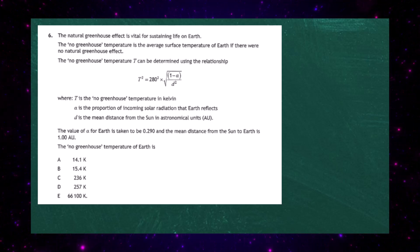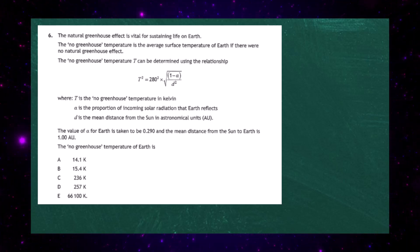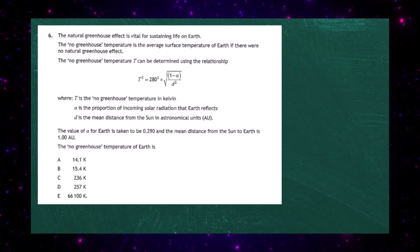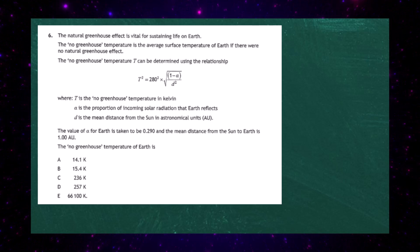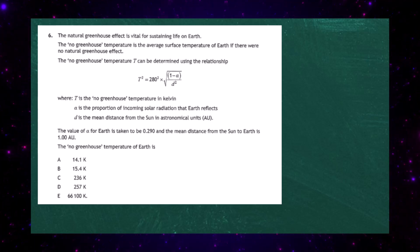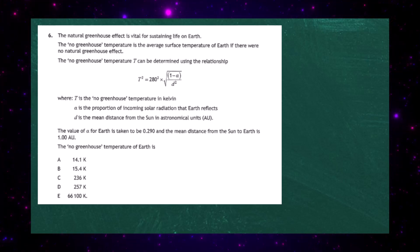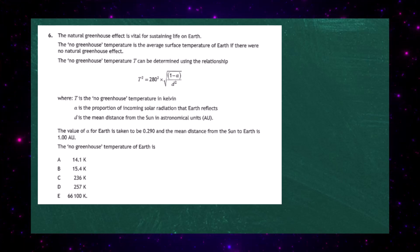And d is the mean distance from the sun in astronomical units (AU). The value of α for the Earth is taken to be 0.290, and the mean distance from the sun to the Earth is 1.00 AU. We're asked to find the no-greenhouse temperature of the Earth, and we're given five responses.